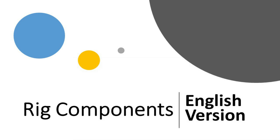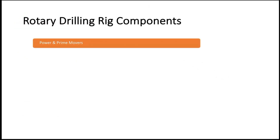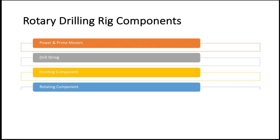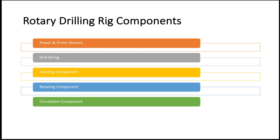Today I just want to walk you through the basics of drilling rig components. There are many individual pieces of equipment on a rotary drilling rig. These individual pieces of equipment can be grouped together into six subsystems: Power System, Drill String, Hoisting System, Rotating System, Circulating System, and finally Well Control System.